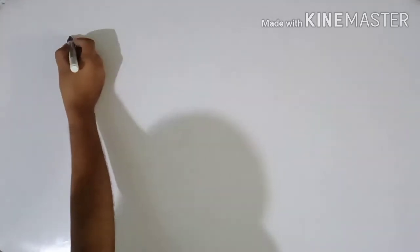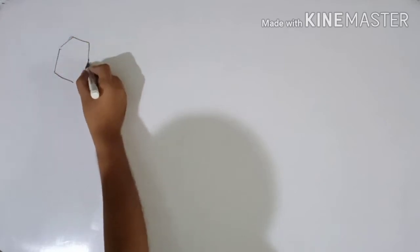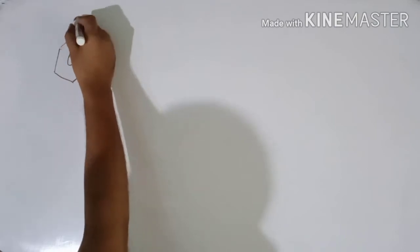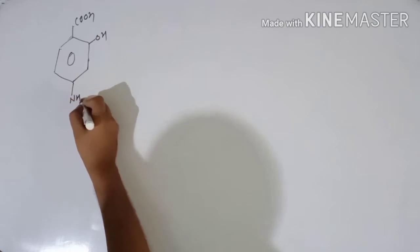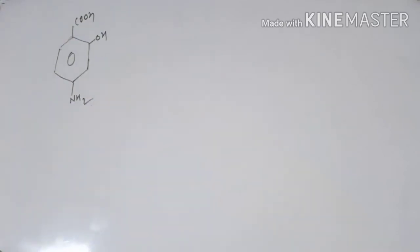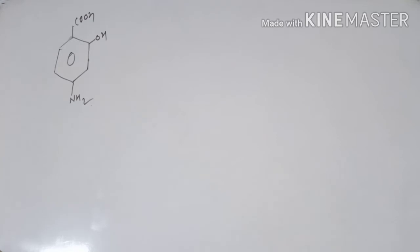Para-amino salicylic acid has the following structure. Now how can we synthesize this drug? What are the starting materials or from where can we start the synthesis? Definitely this amine group at the para position can be developed by reduction of a nitro group.